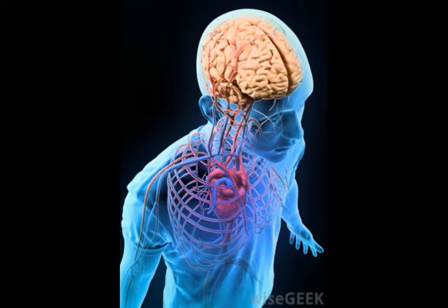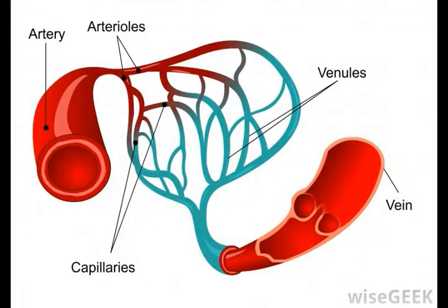The internal carotid arteries provide blood to the front of the brain. The left internal carotid provides blood to the left portion of the brain, and the right internal carotid provides blood to the right portion. As each internal carotid artery enters the skull, it divides into three branches that connect to the anterior cerebral artery, middle cerebral artery, and posterior communicating artery.